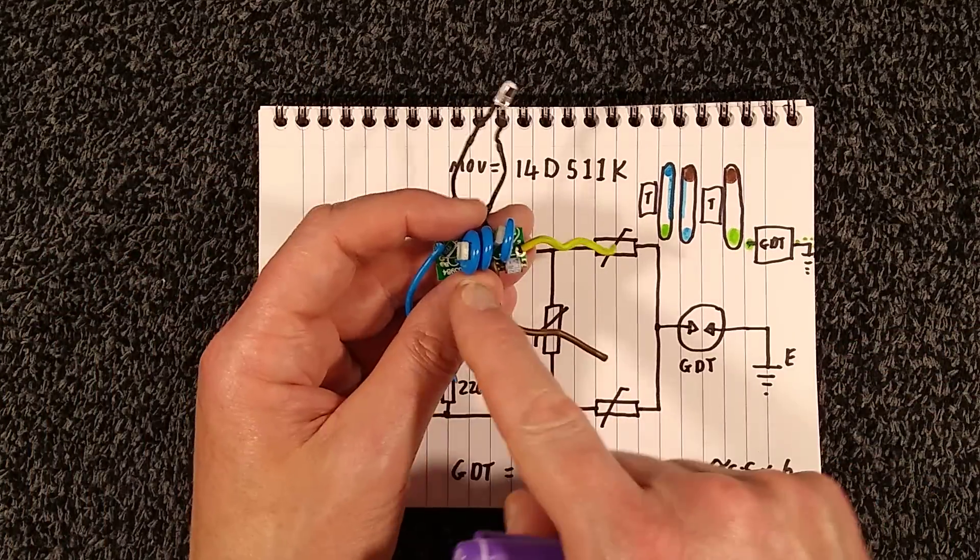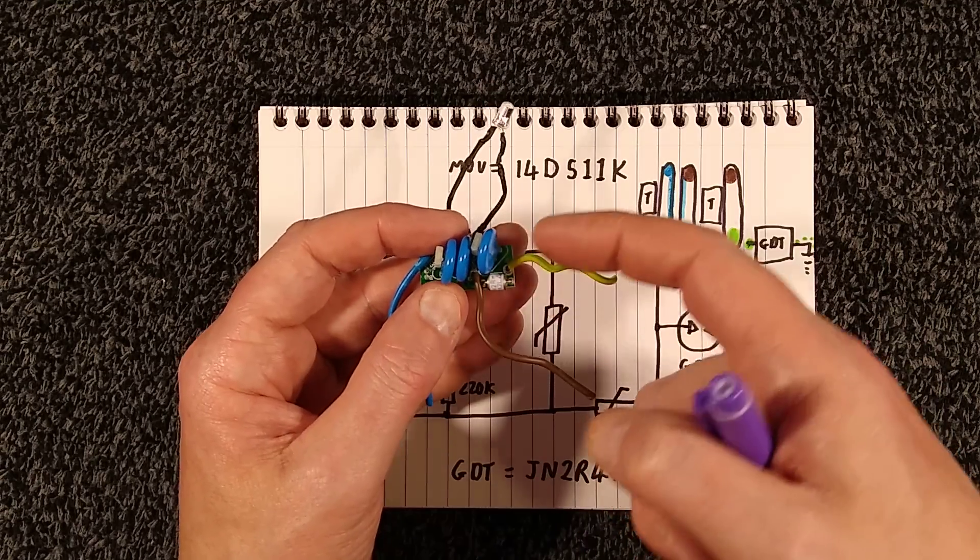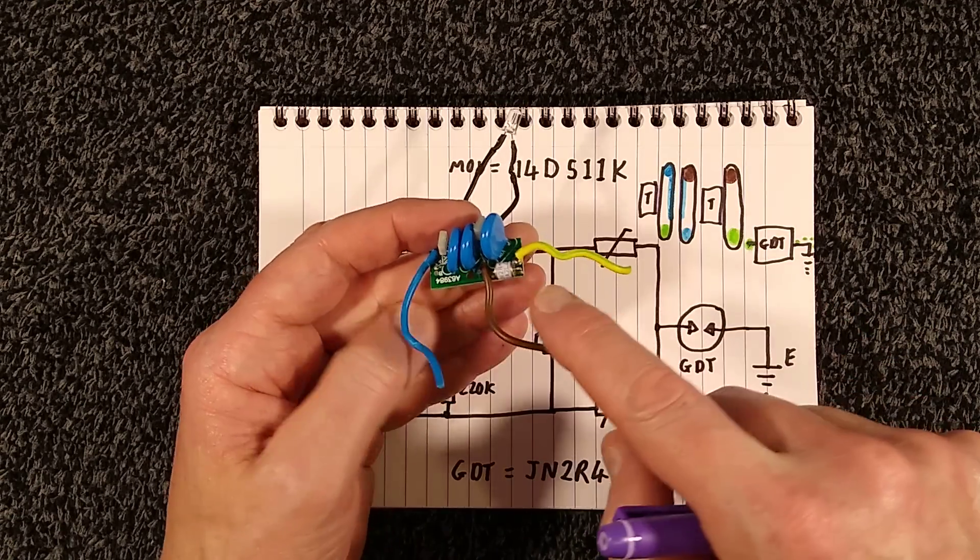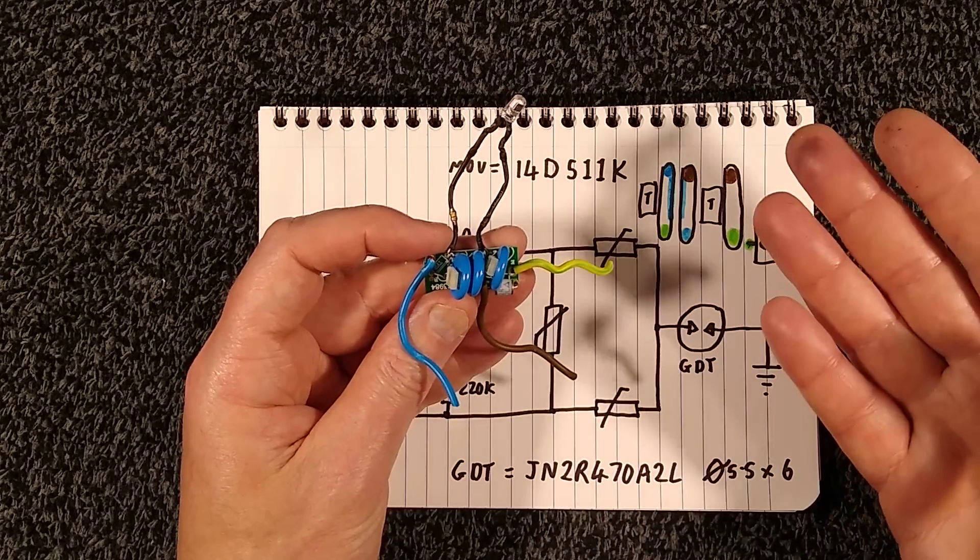What we have here are a thermal fuse, the two metal oxide varistors, another thermal fuse, and then another metal oxide varistor, and then the little gas discharge tube. I've identified them all. They're all standard components.